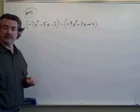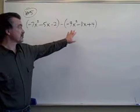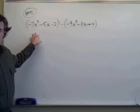This is problem number five on your review sheet. It involves a subtraction. I'm subtracting this trinomial from this trinomial.